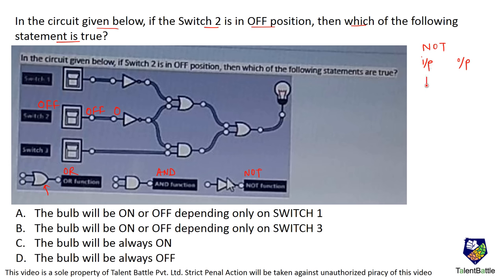For the NOT function: if input is 1, output is 0 — exactly reverse. If input is 0, output is 1. So on input gives off output, and off input gives on output.